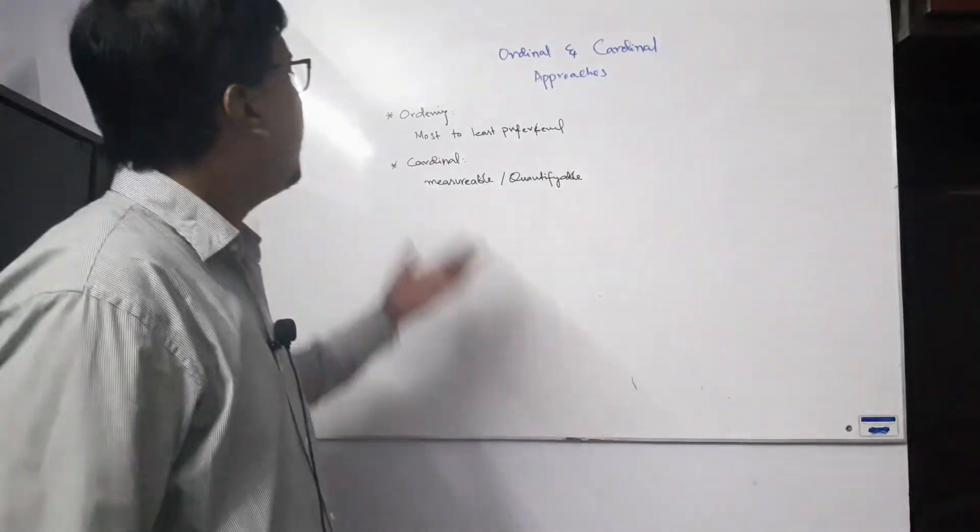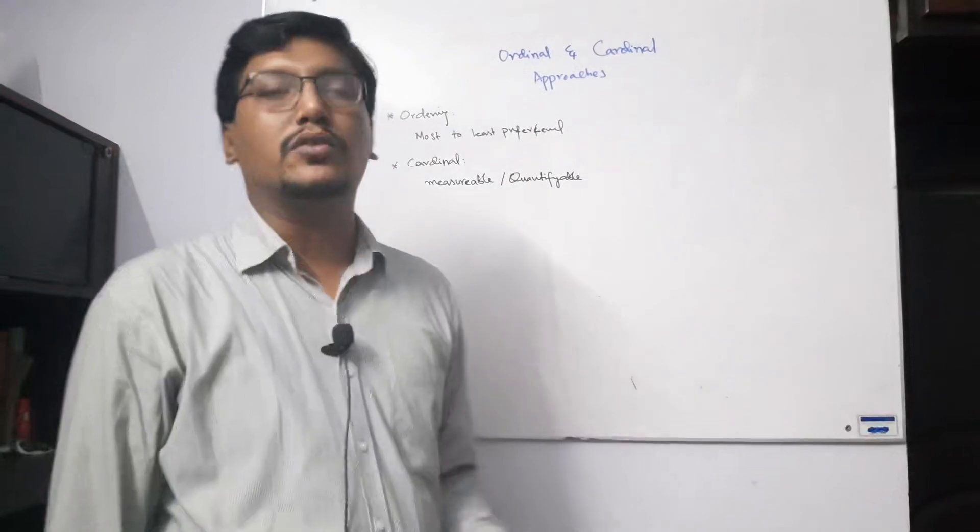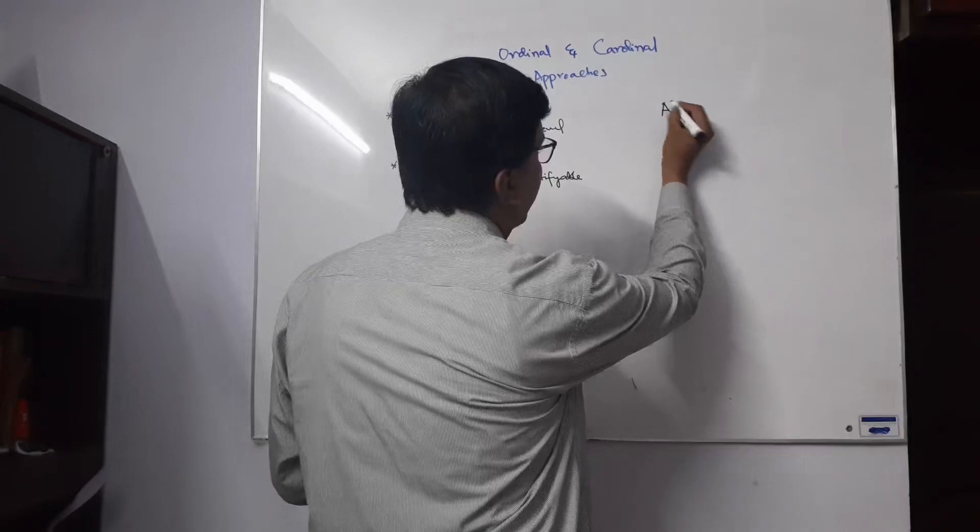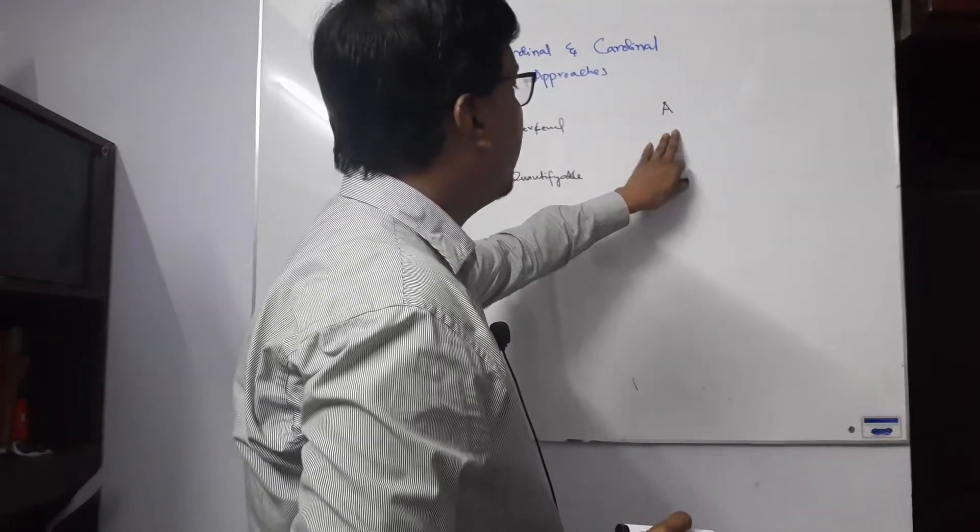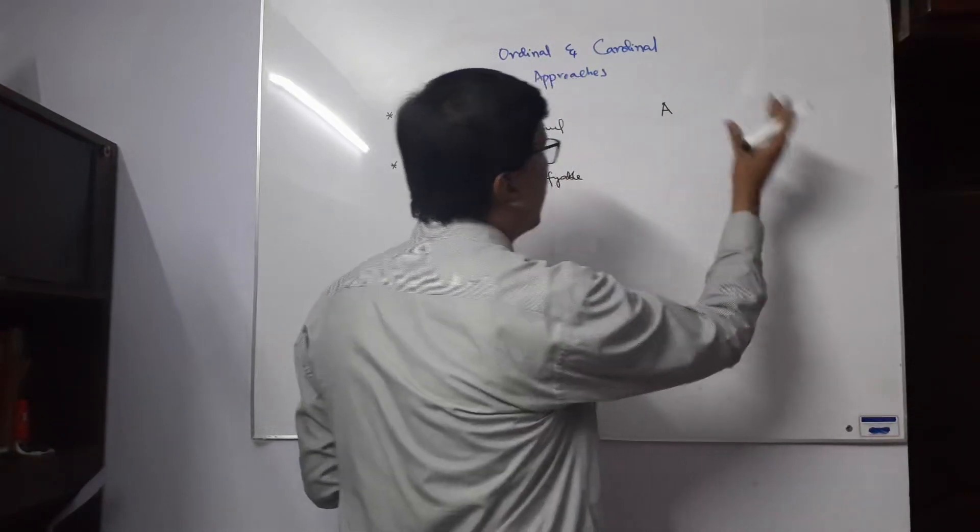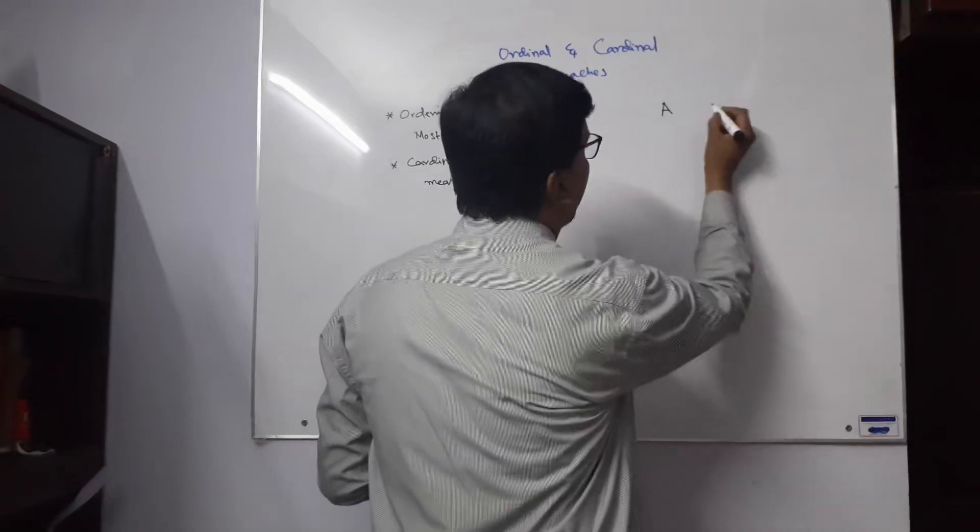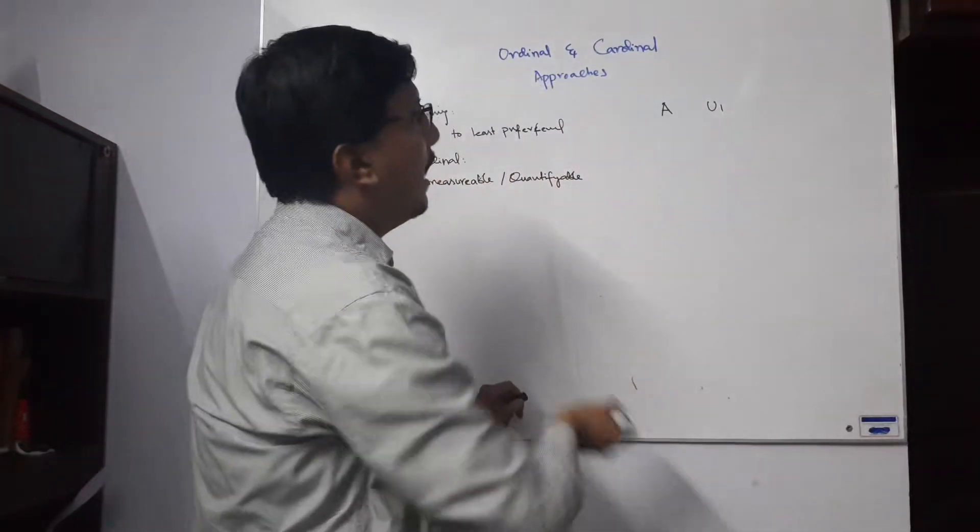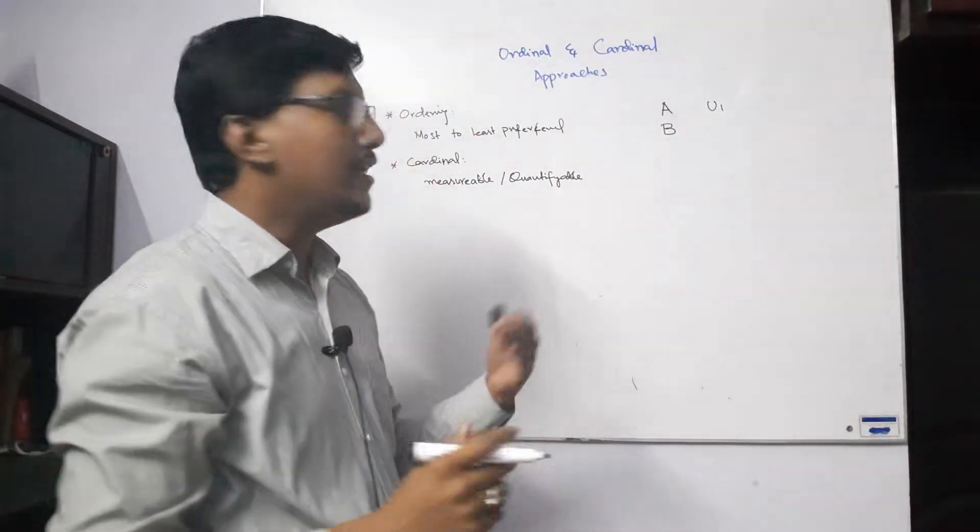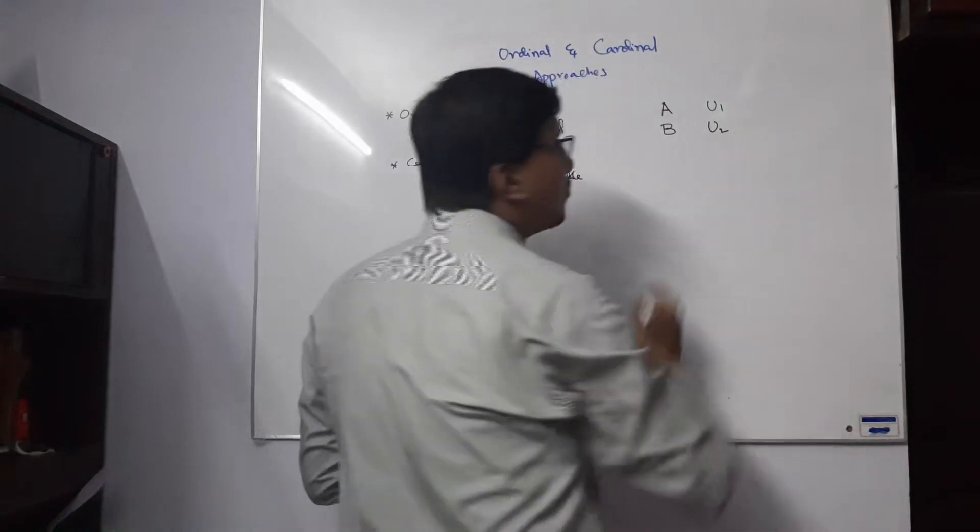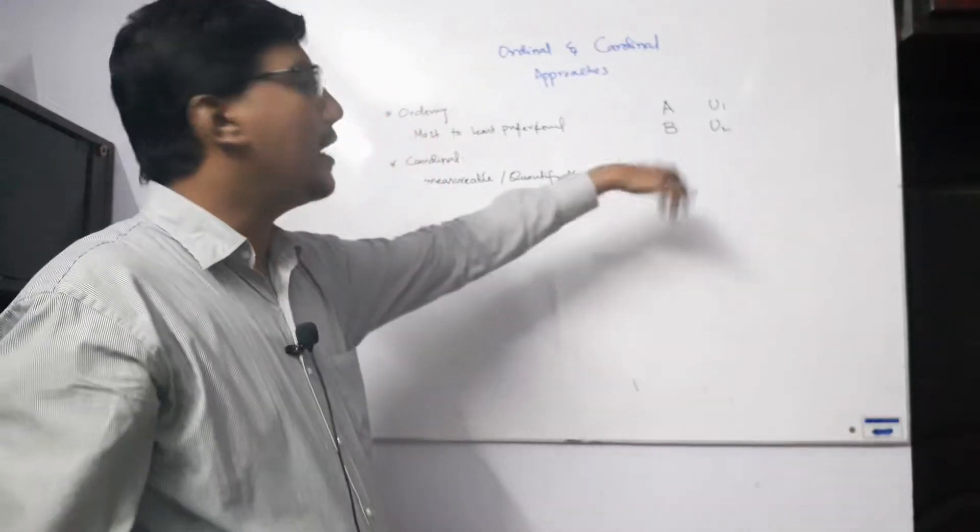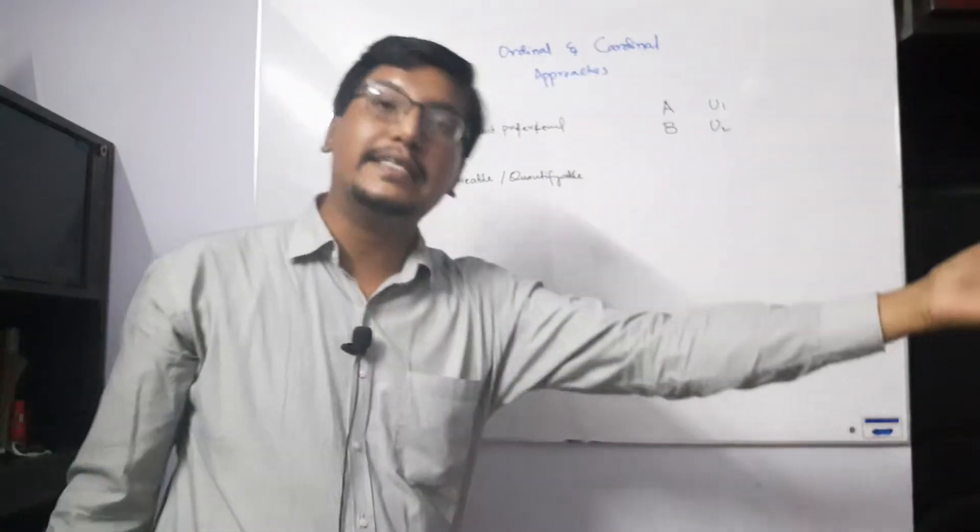Let's suppose we will just give the rank of the goods. We can say that Mr. A is using commodity X, so he is on a satisfaction level U1. Let's suppose Mr. B is using the same commodity and his ranking is U2. One person gives it second rank, another says I give it first rank, another person gives it fifth rank.